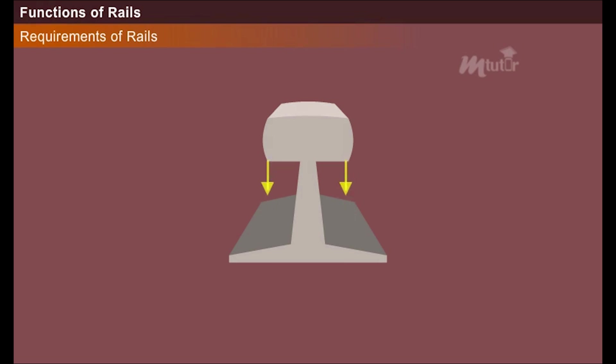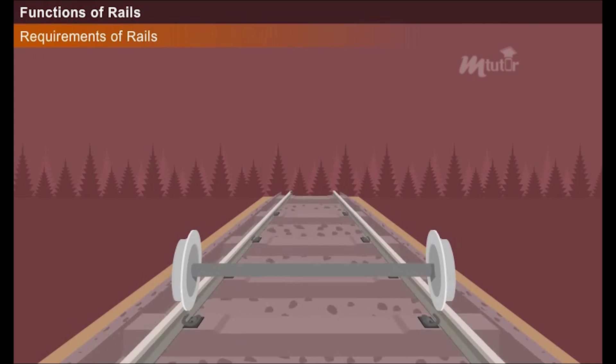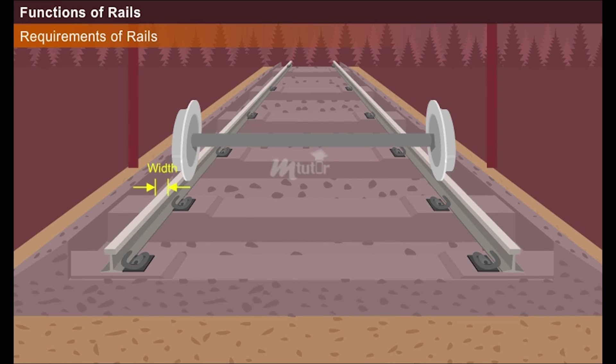Similarly, the rails must have adequate depth to manage wear in the vertical direction. Finally, the width of the rail head should be sufficient enough to accommodate the wheel flange and safely distribute the loads downwards.